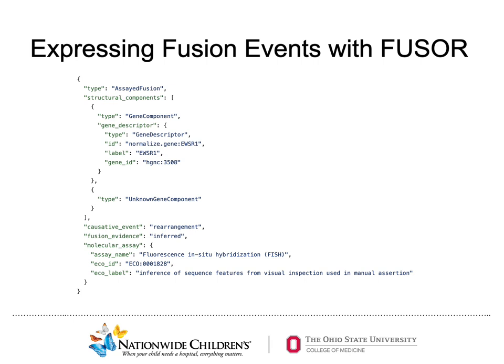Here is an example of an EWSR1 assay fusion with an unknown partner represented using the Fuser class. In describing fusion partners, Fuser resolves ambiguous gene aliases through normalization and records other relevant metadata, such as the cause of event and information regarding the molecular assay, which provide important context needed for accurate clinical interpretation. Fuser objects can be created by supplying the relevant data to classes within the wider Fuser class. For example, if a tumor sample is sequenced and processed through a fusion detection pipeline, outputted data could include identification of the involved fusion partners, chromosome number, strands, and breakpoints. This data could then be supplied to structural elements of the assay fusion class, allowing for the fusion event to be ascribed and better understood. More examples can be found in the project's GitHub repository.